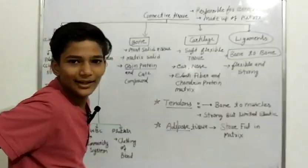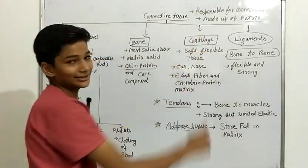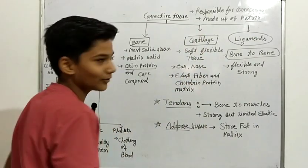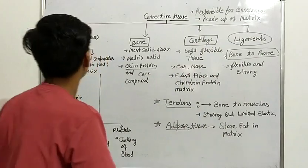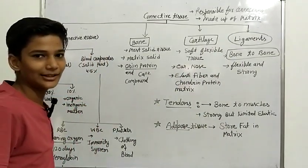Connective tissue is responsible for connections in our body. It is made up of matrix. Matrix is the base substance of connective tissue. There are many types of connective tissue.